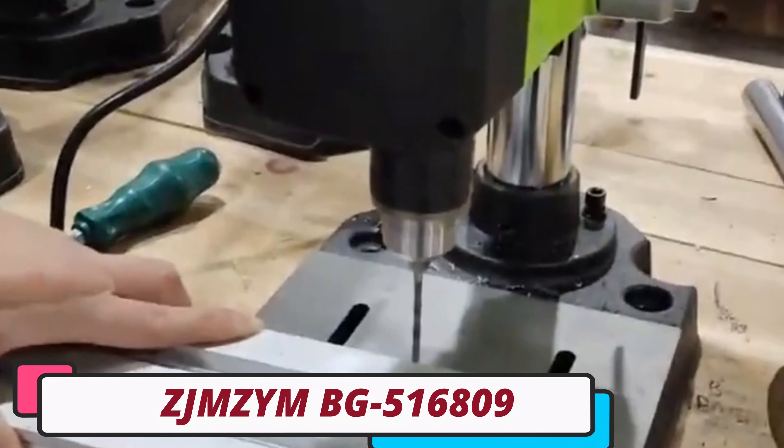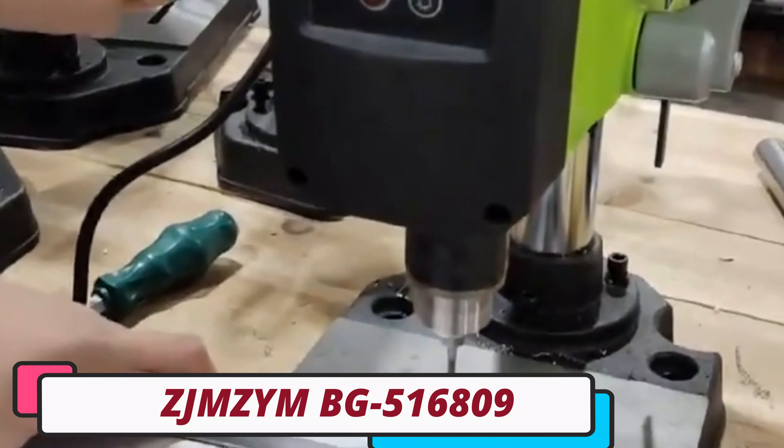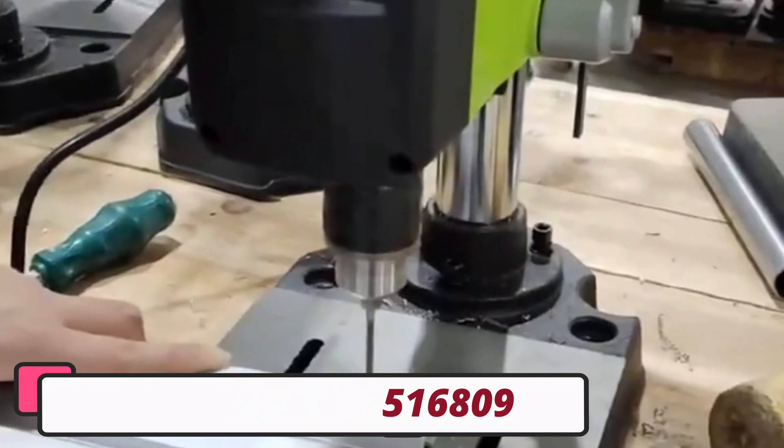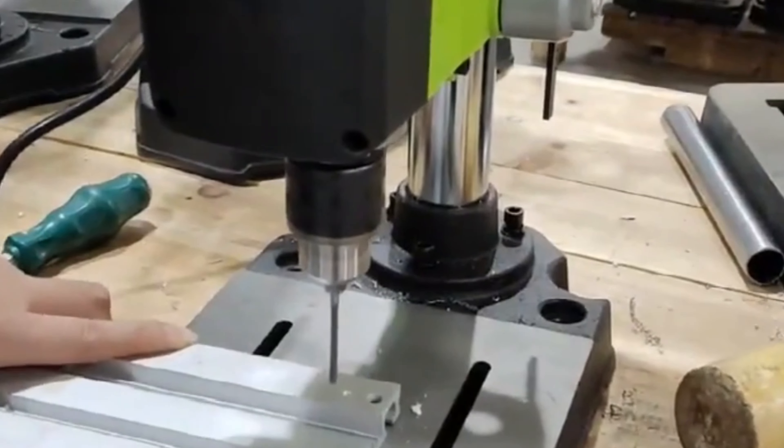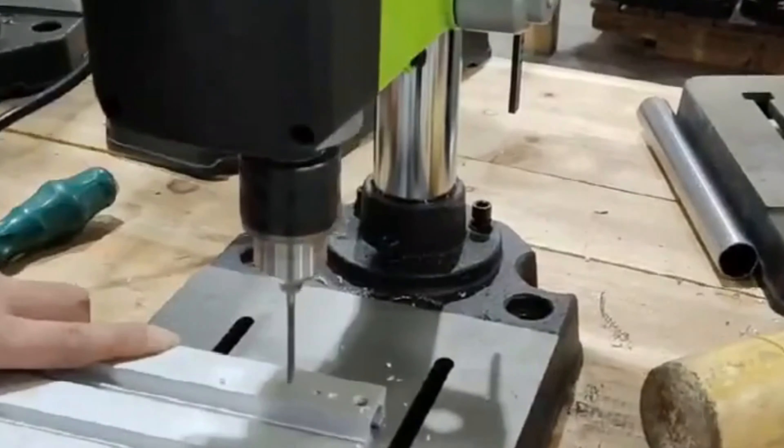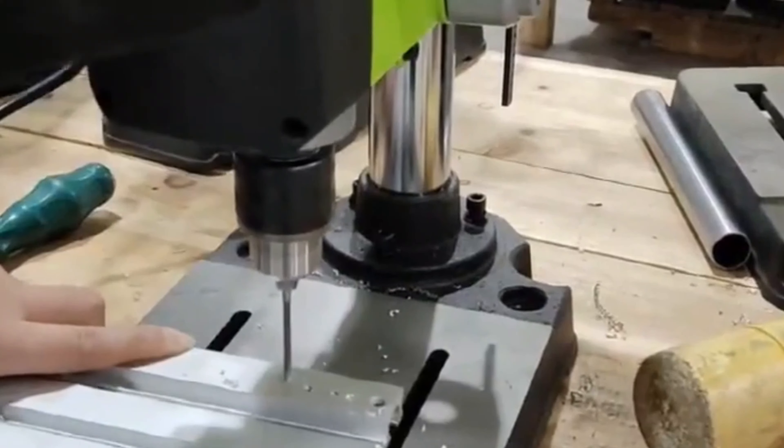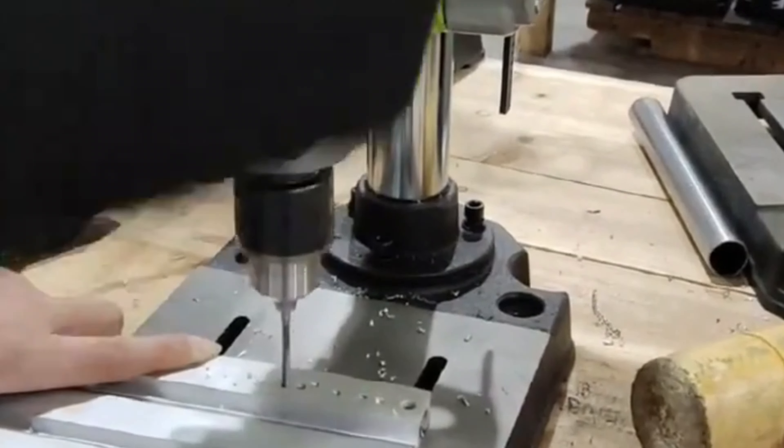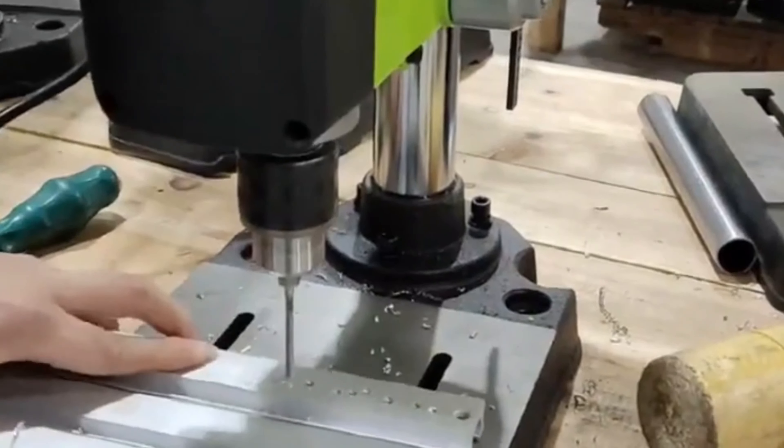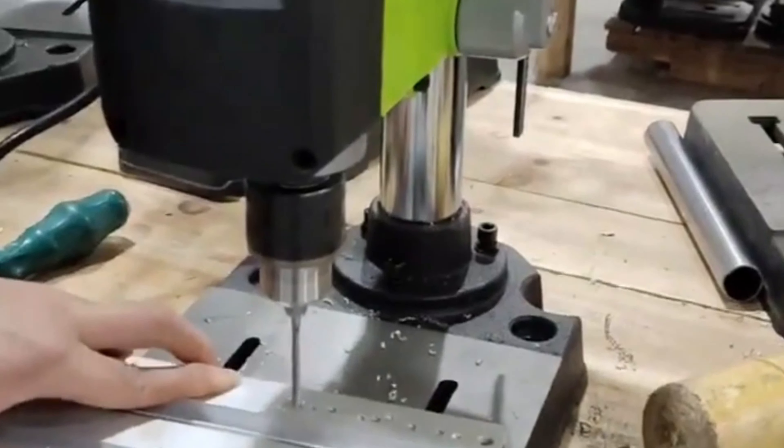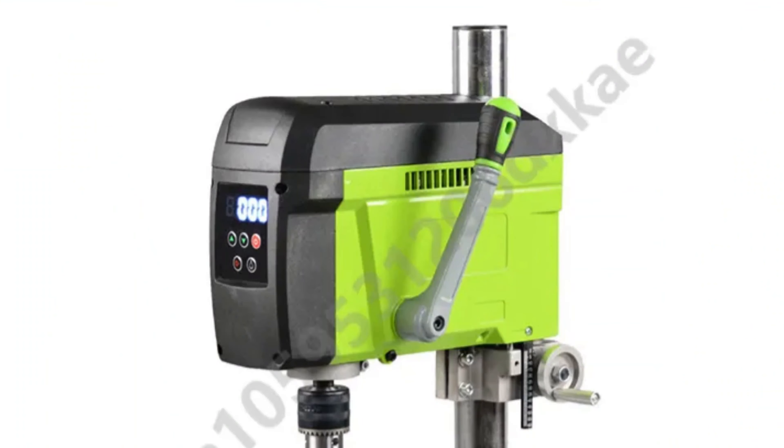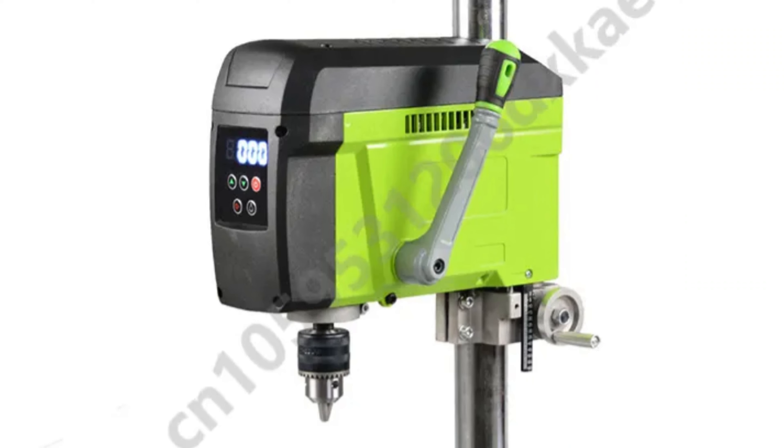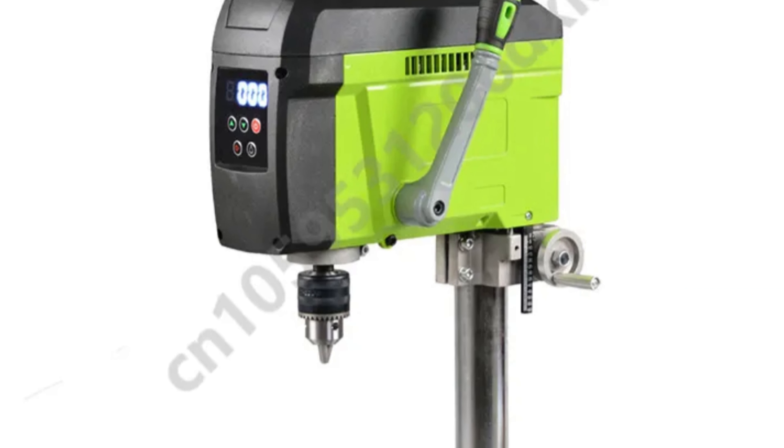Number 3. ZJM ZYMBG 516809 Mini Bench Drill is a reliable and efficient tool for home DIY enthusiasts. It features a powerful 400W motor, providing ample power for various drilling tasks, including wood, metal, and plastic.